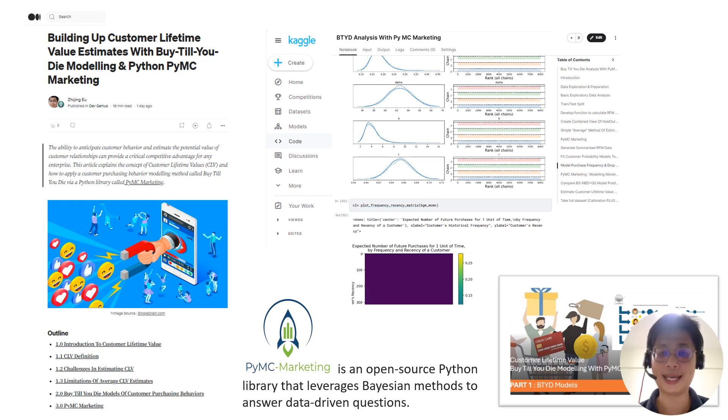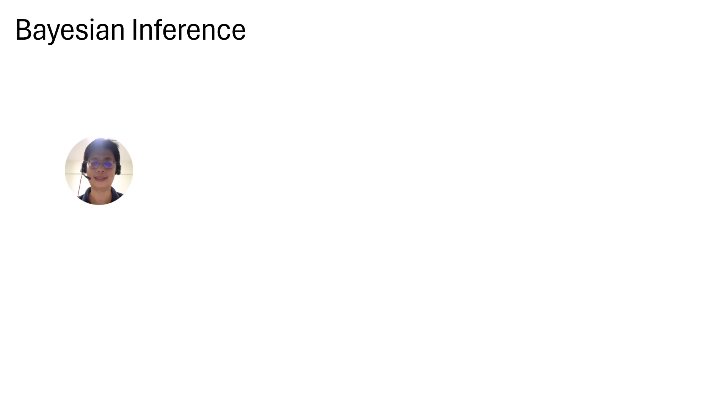So having said that, let's start with the first question: what the heck is Bayesian inference? In traditional machine learning, say like you're trying to fit a linear regression against a bunch of dots, you normally have a single estimate of each attribute, and the attribute could be regression coefficients for linear regression. You do this by trying to minimize errors.